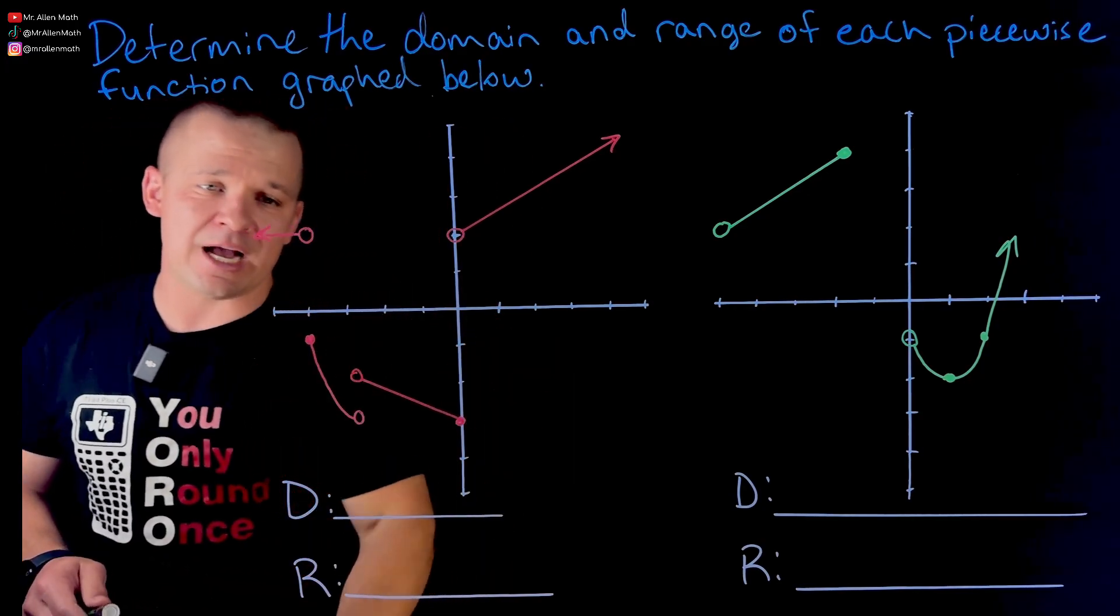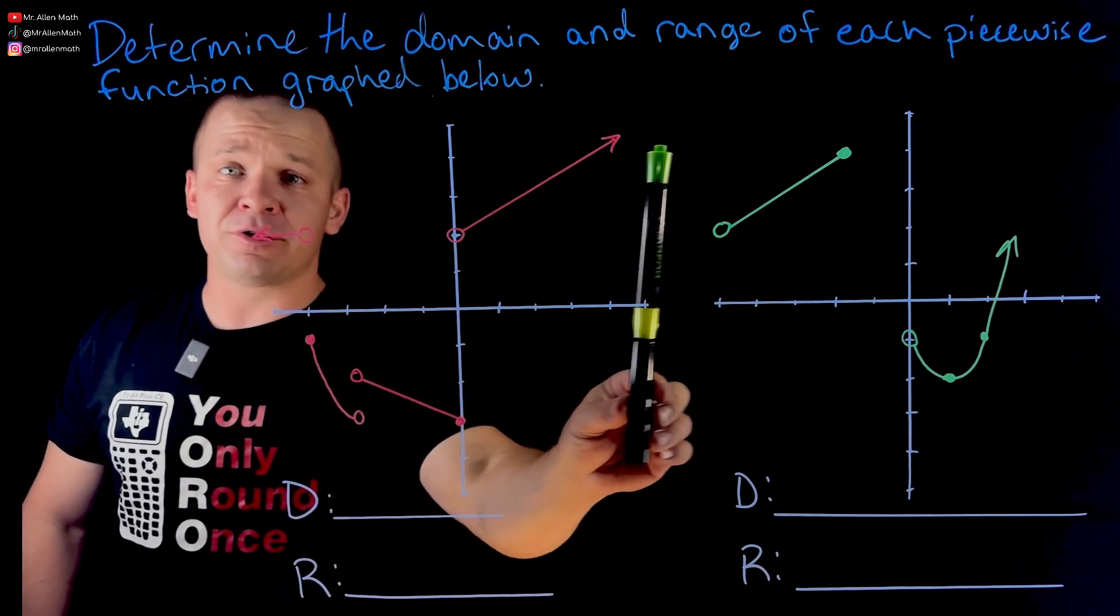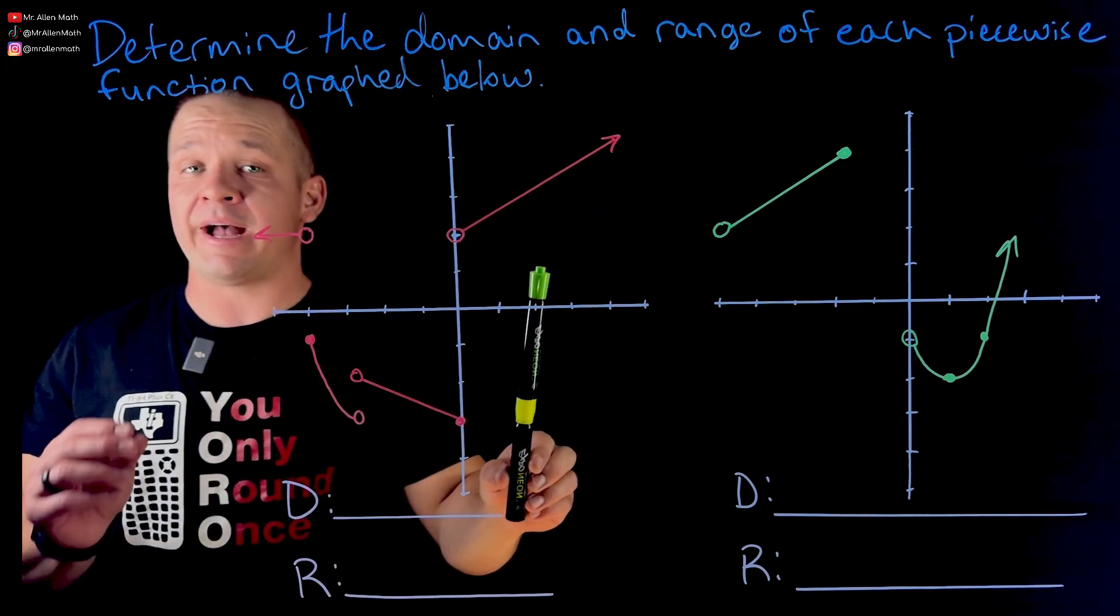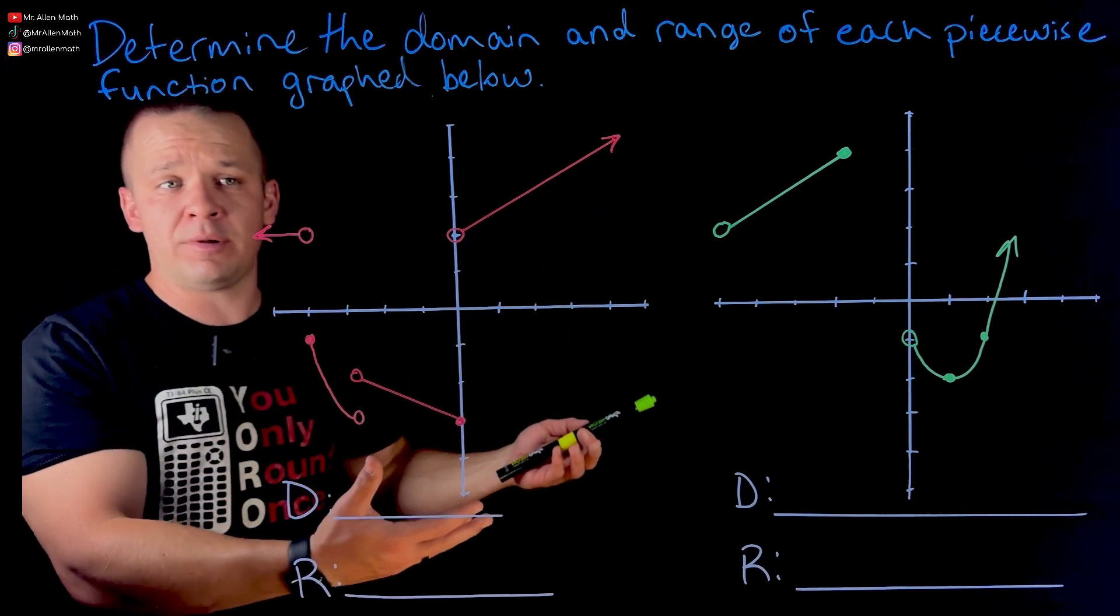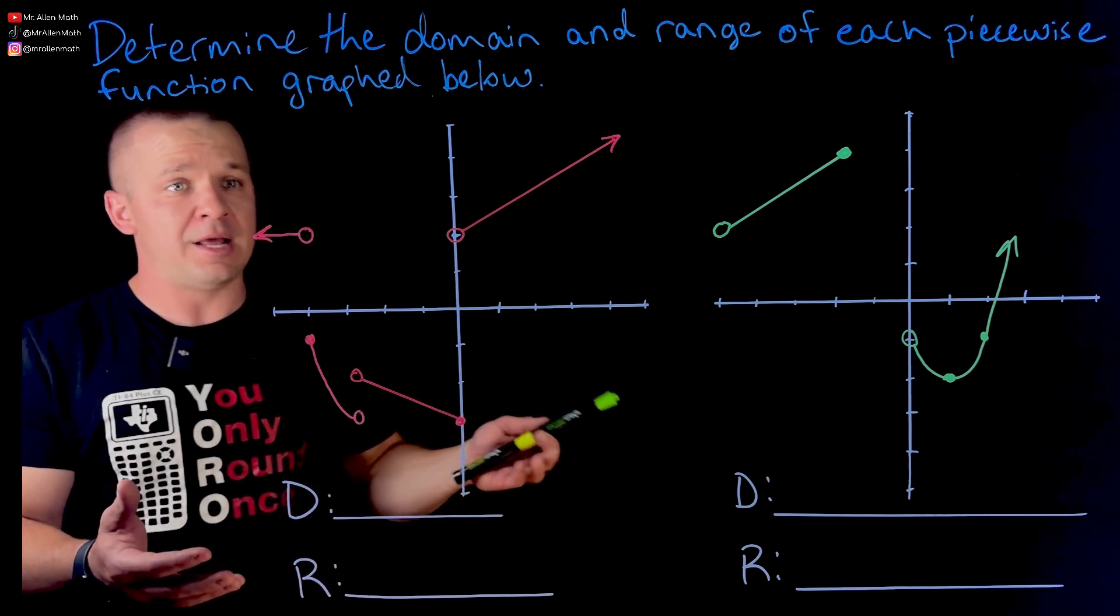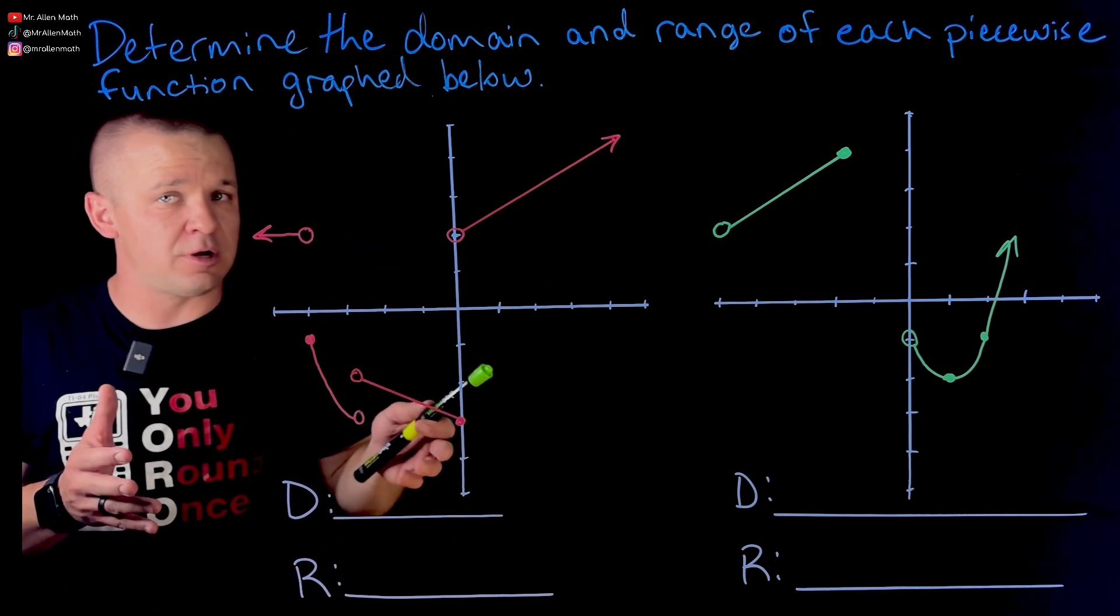Here's how I like to tackle domain and range. I take a marker, a pencil, whatever it may be, and I'm going to move from left to right for my domain because we're talking about X values. And the question is, is there anything that we need to eliminate? Because at first we're thinking all real numbers, right? It's everything unless there's something I have to exclude.